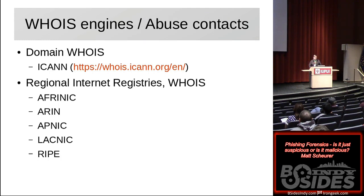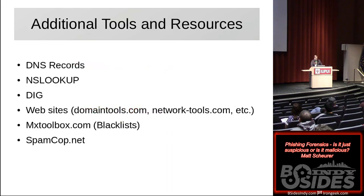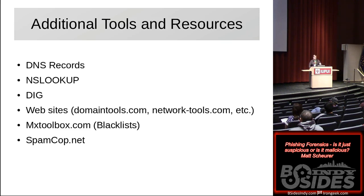Using some of the network tools we're going to talk about, you can understand the IP address of where that landing page is, and who the abuse contact is in those records. Locally on your own system you're going to have NS Lookup almost regardless of operating system — that's kind of a universal one. A lot of Linux and Unix-based systems also support DIG, which can give you a little bit more. If you're just getting started, there are websites devoted to this, including DomainTools.com and NetworkTools.com.